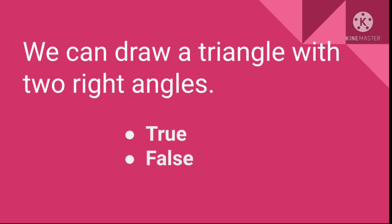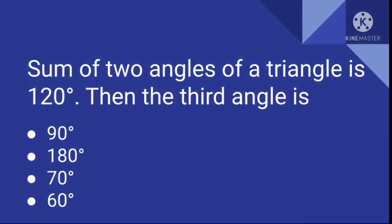Question number 15: The sum of two angles of a triangle is 120 degrees — find the third angle. Your options are 90 degrees, 180 degrees, 70 degrees, or 60 degrees. Find out the third angle of the triangle.